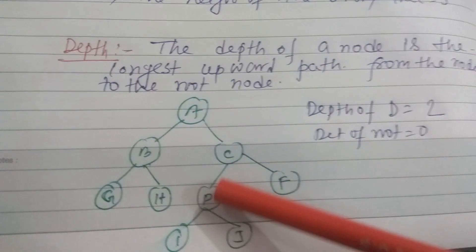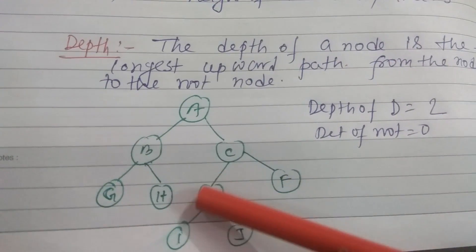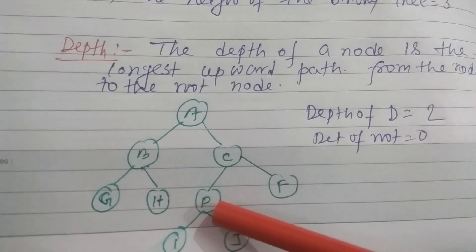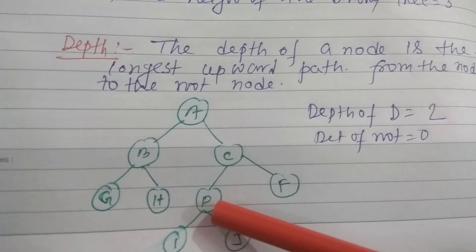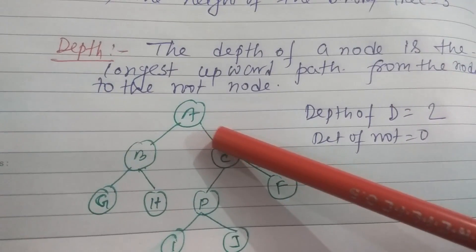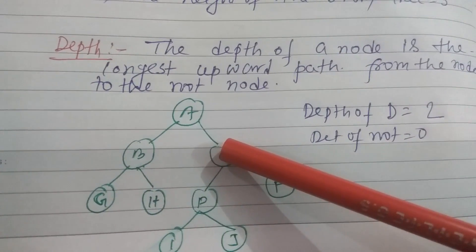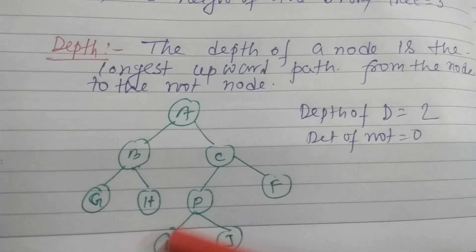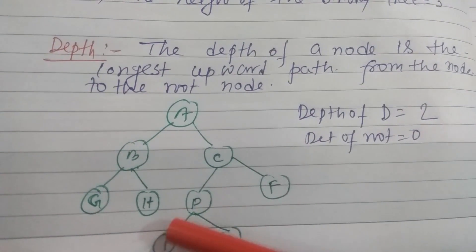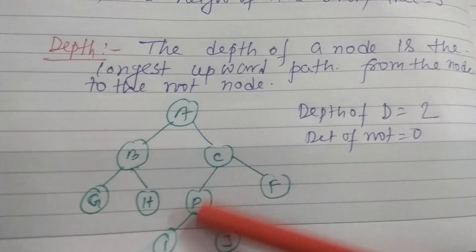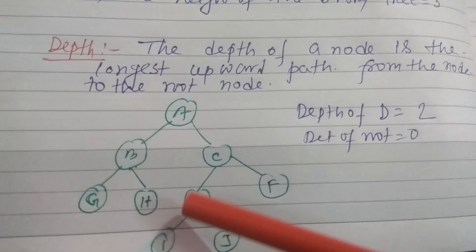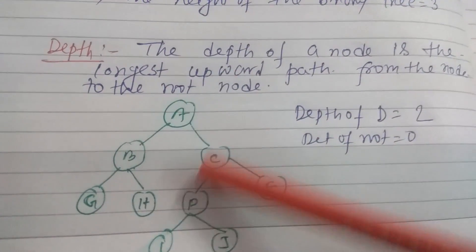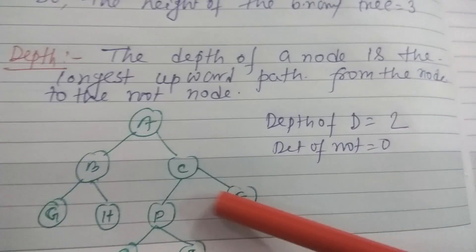But for a node, height and depth are not equal. For example, for node D, the height is the downward path, which is 2, but the depth is 1 — so they are different. For a node, height and depth are defined separately, but for a tree, height and depth are equal.